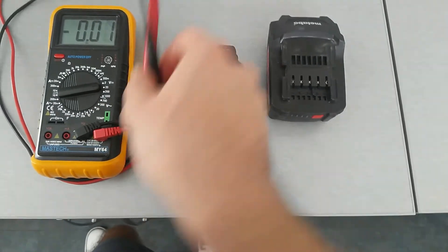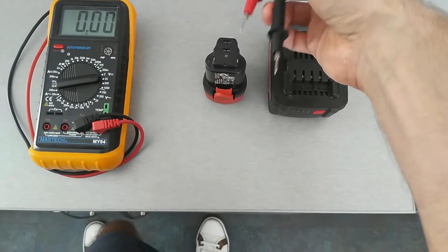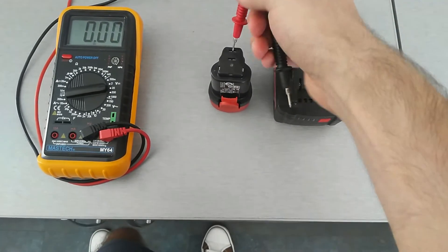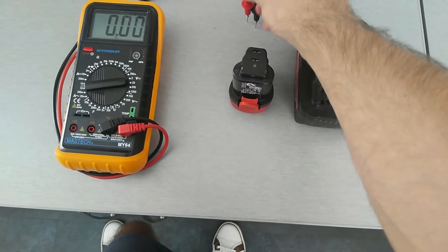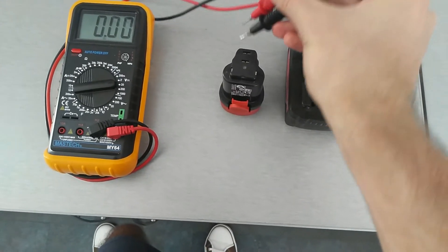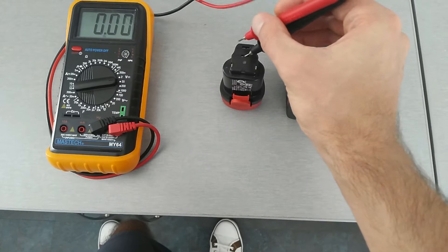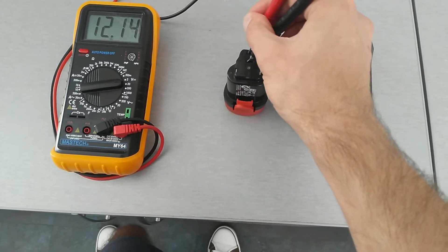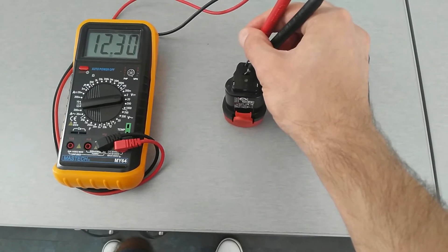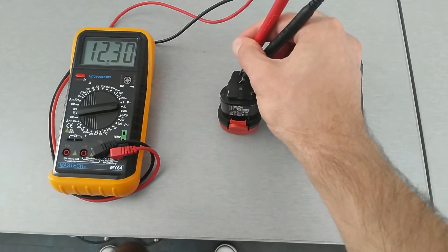Now we take the two probes, put one probe to the plus terminal. We take the two probes, put one to the minus terminal and the other to the plus terminal, and you can see 12.30 volts.